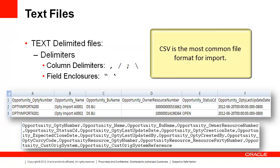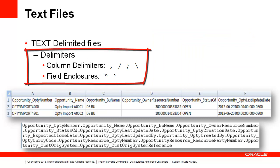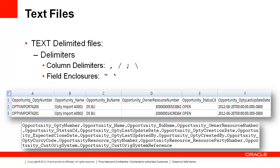CSV is the most common file import format. CSV files are comma-separated value files. However, commas are not the only acceptable delimiter. Other delimiters, like semicolons and quotes, are also allowed. The file can include a header row. In this example, the header row includes the name of both the object and attribute. This is very handy when you get to the mapping part of the file import activity.